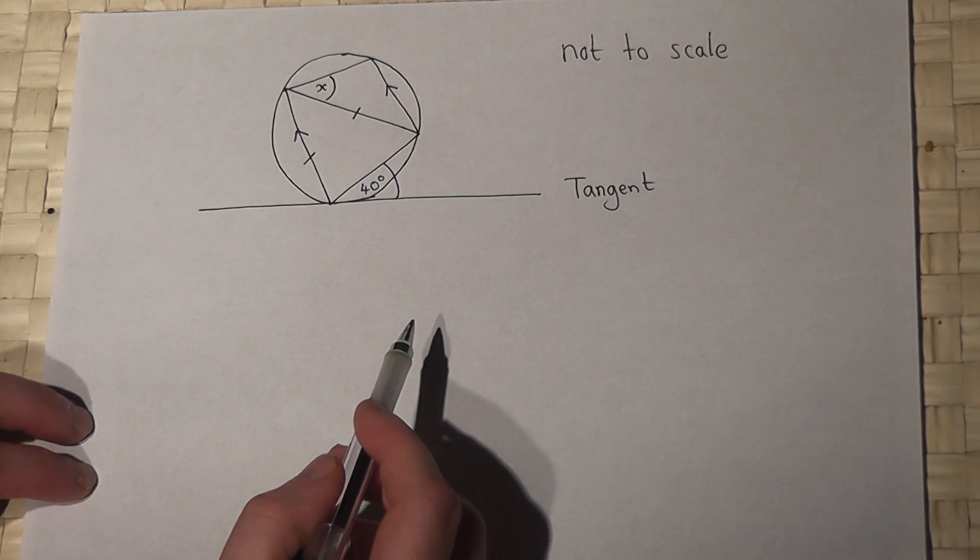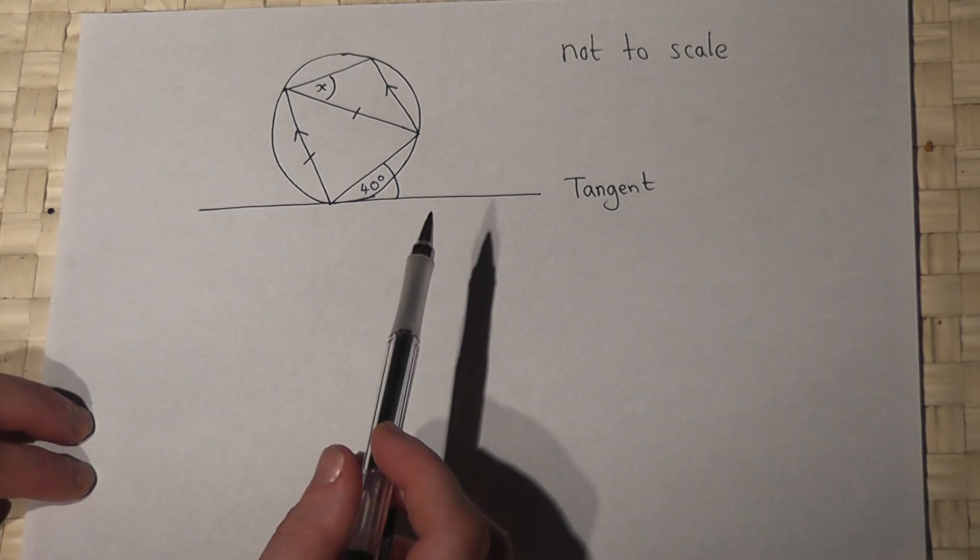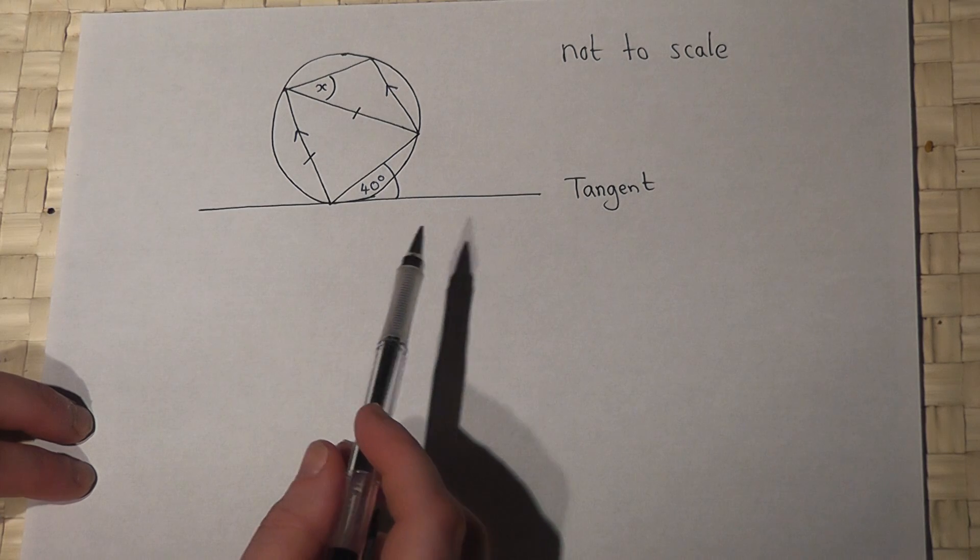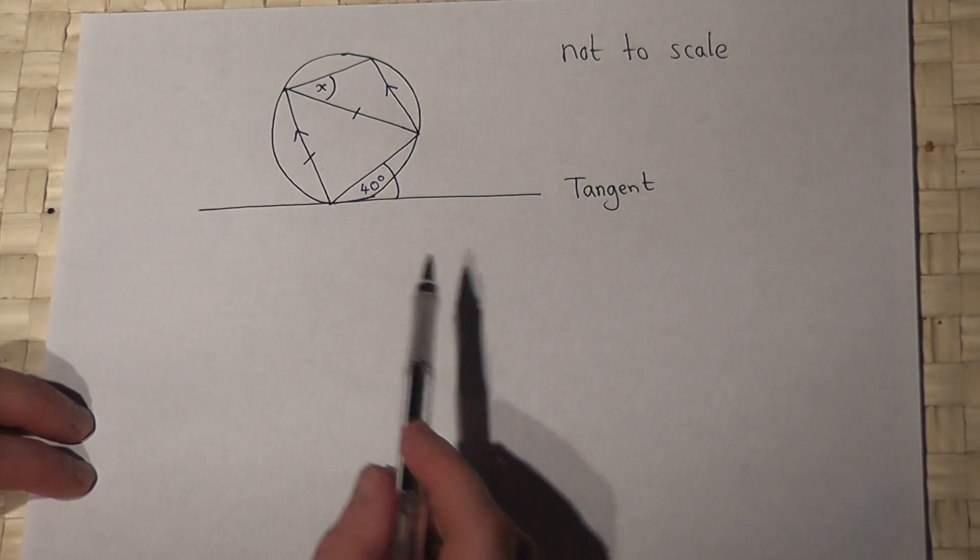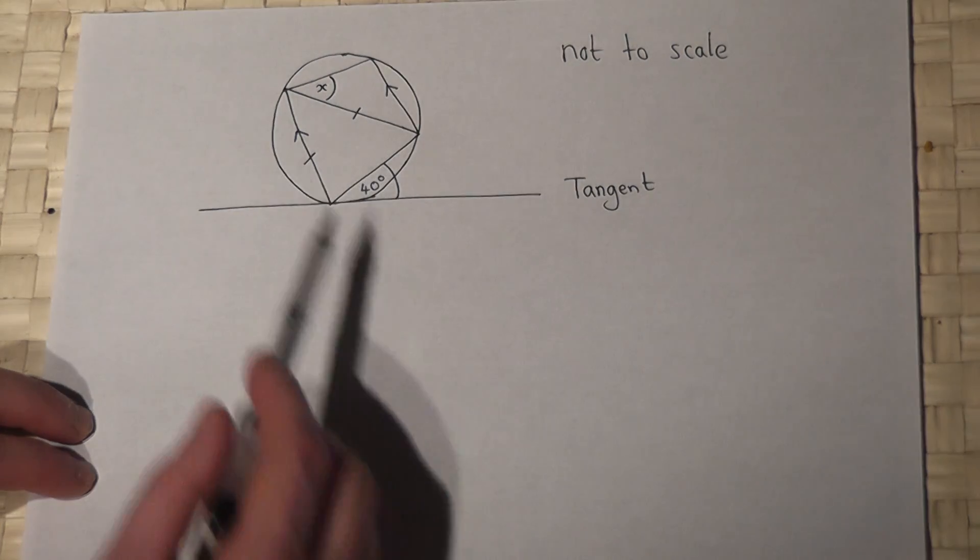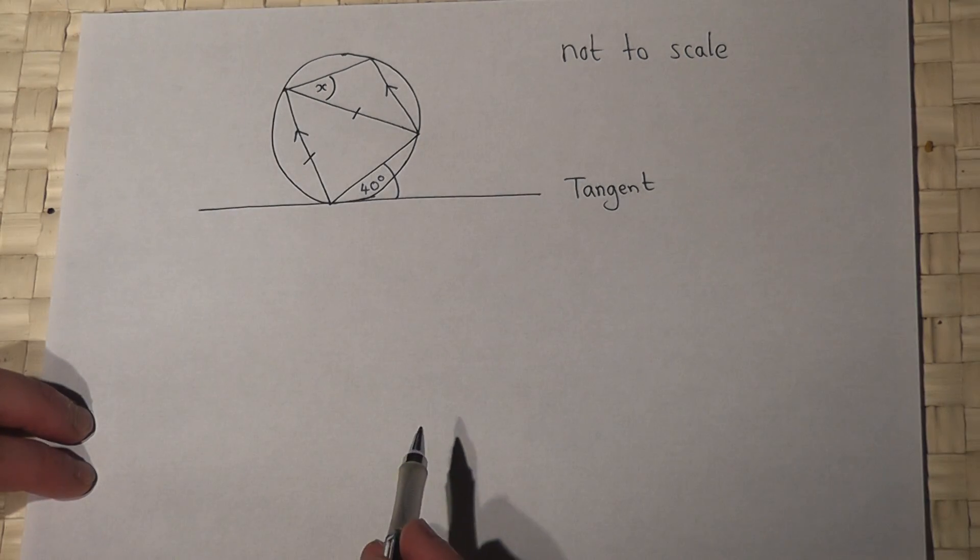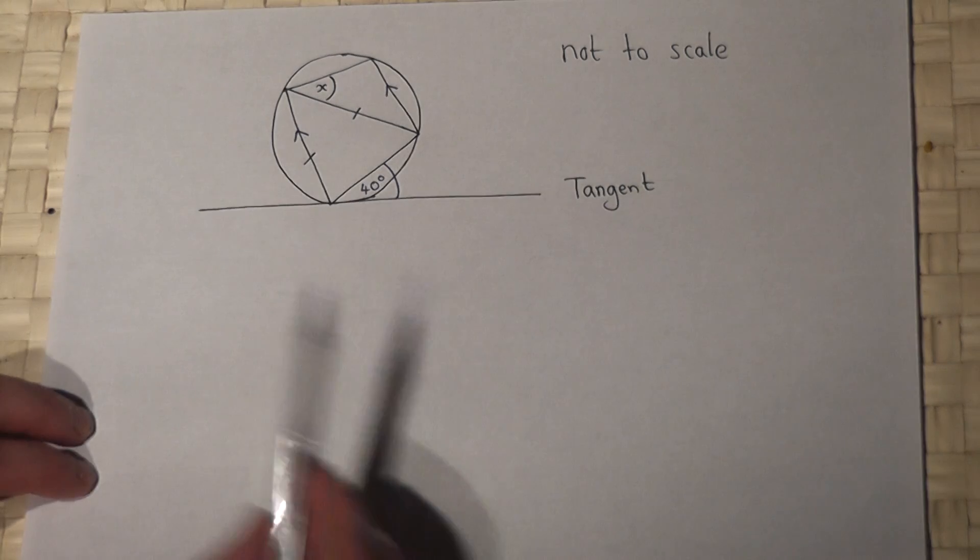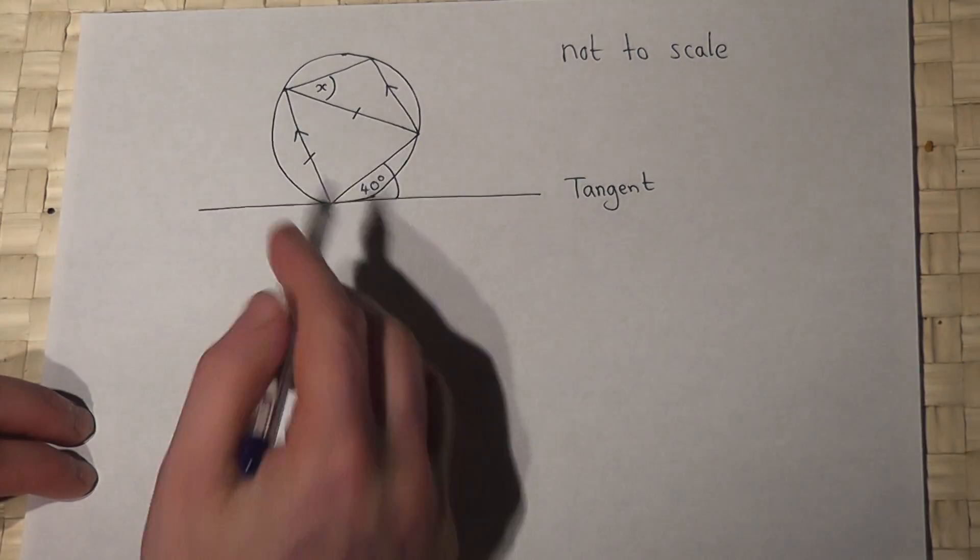This problem reviews a number of circle theorems. We've got a tangent and a cyclic quadrilateral split into two triangles, and the question says find angle X.